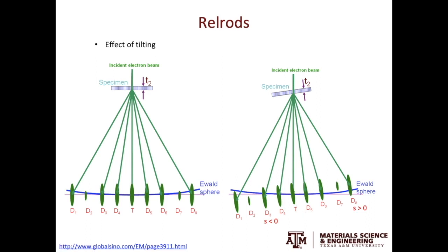The second scenario is: what if we tilt the specimen? As we tilt the specimen in real space, we also tilt the relrods in reciprocal space. The excitation error at the transmitted beam is still zero. The excitation error on the right will be positive because the Ewald sphere is cutting the lower half of the relrods. The excitation error on the left-hand side will then be negative.